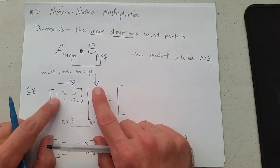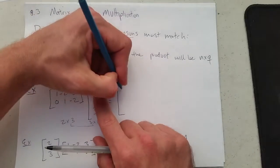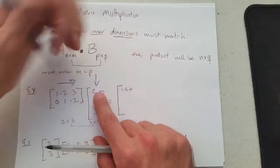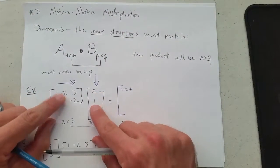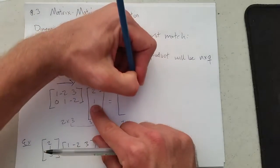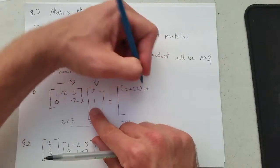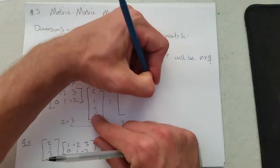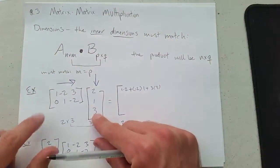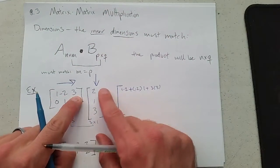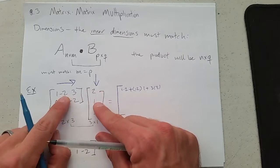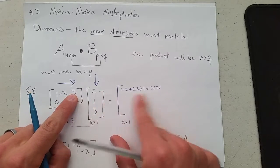What you do is multiply these entries: one times two, and then you add the next two, plus negative two times one, plus three times three. You're going across the row, down the column, and you multiply and then add that up.